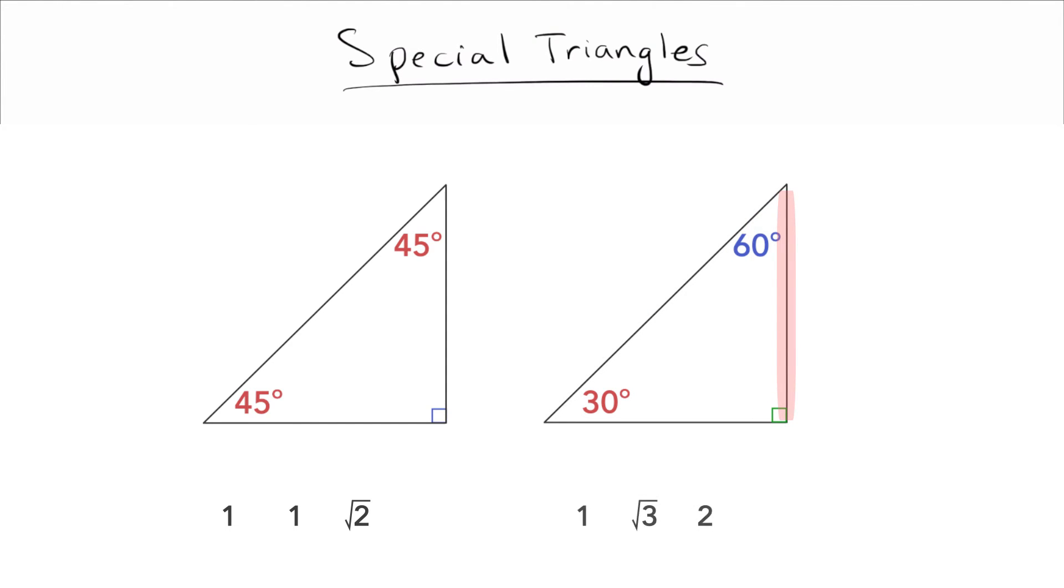Out of my sides, 1, 2, square root of 3, 1 is the smallest number. So the 30 degrees opens up to 1. What's the biggest number? The biggest number is 2. The biggest angle is 90 degrees. So the biggest angle, 90 degrees, opens up to the biggest side, 2. And that just leaves me with the square root of 3.